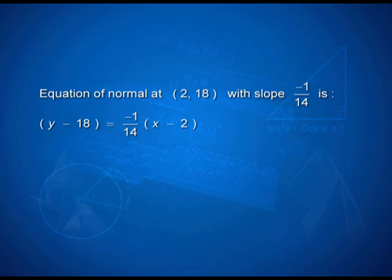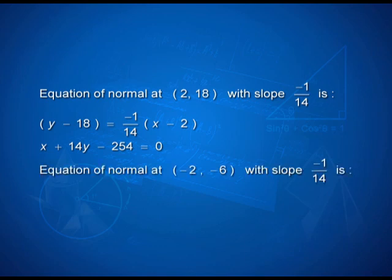That is why the question asks for 'normals' to the curve — the plural word means there are two normals and two answers. The normal at (2, 18) with slope −1/14 turns out to be x + 14y − 254 = 0, and the second normal turns out to be x + 14y + 86 = 0. Something which was indirect, but we could figure it out because we had a known and an unknown linked together through the concept of the normal slope being the negative reciprocal of the derivative of the function.